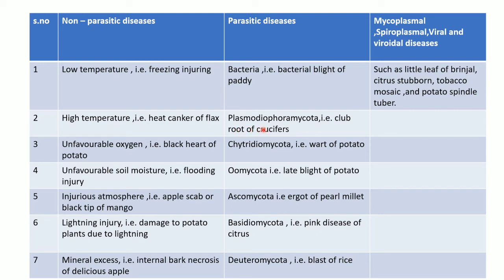In parasitic diseases we come across bacteria, Plasmodiophoromycota, Oomycota, Ascomycota, Basidiomycota, and Deuteromycota. For example, bacterial blight of potato is a bacterial disease; club root of crucifers is caused by Plasmodiophoromycota; late blight of potato is caused by Oomycota; ergot of pearl millet by Ascomycota; pink disease of citrus by Basidiomycota; and blast of rice by Deuteromycota.